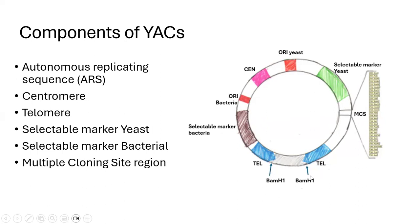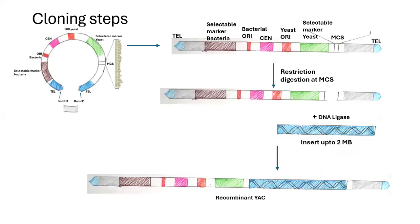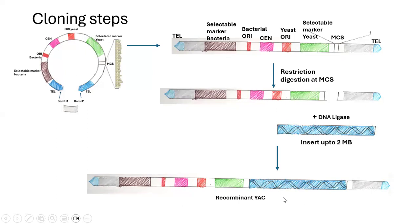We also have two BamHI sites located at the ends of the telomeric regions. During the cloning reaction, the first step is to digest with BamHI to remove this chunk of DNA, which linearizes the yeast artificial chromosome as can be seen in the diagram. Then the yeast artificial chromosome is digested at the multiple cloning site using a suitable restriction enzyme, leading to formation of fragments which are then ligated with the insert molecule. Up to as large as two megabase pairs of DNA fragment can be cloned here, and the two are mixed in the presence of DNA ligase, resulting in formation of the recombinant yeast artificial chromosome.